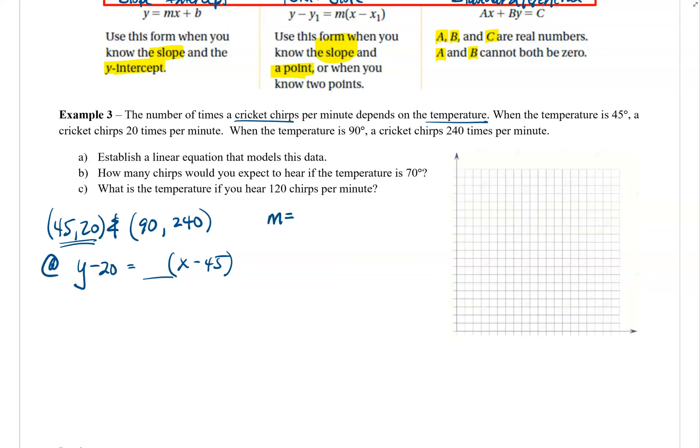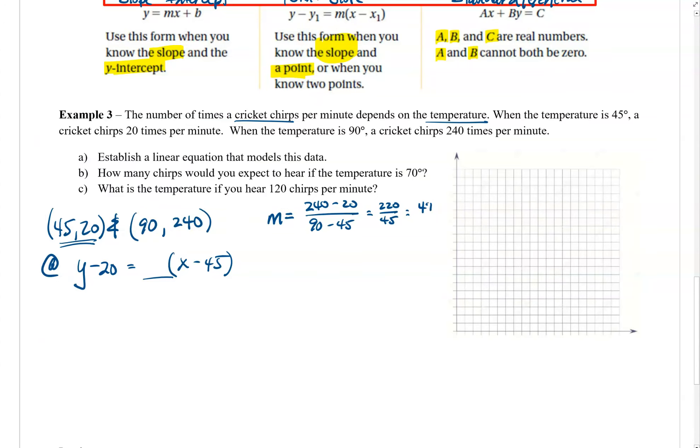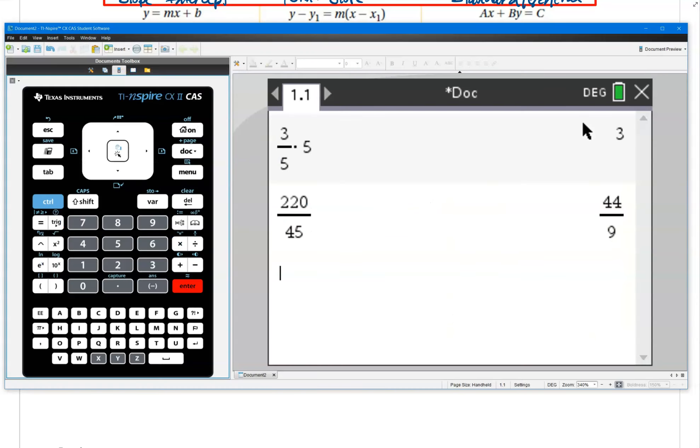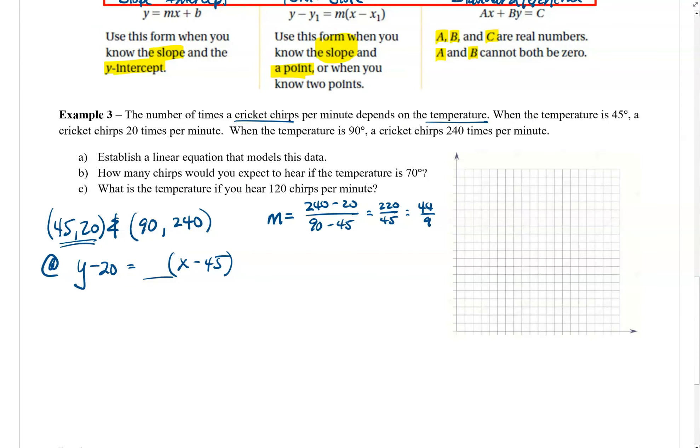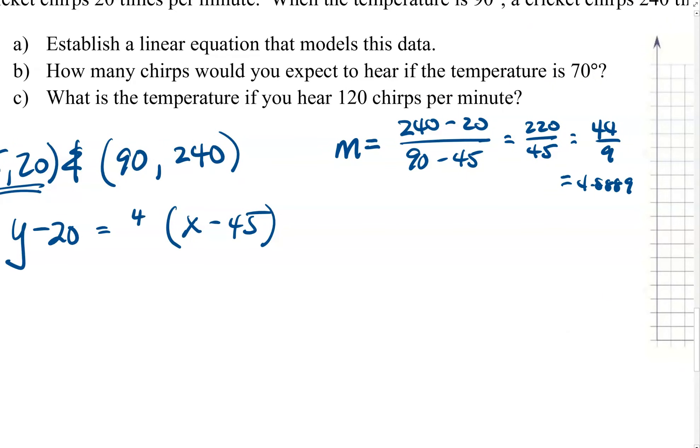The slope would be the difference in our y values. I'll take 240 minus 20 and divide that by 90 minus 45. To me, that looks like 220 divided by 45. And I can't really simplify that in my head, so I'll go to the calculator here. 220 divided by 45. If I just press enter, that calculator should reduce for us, and we get 44 ninths. If I wanted the decimal, I could do that too. I can press control, enter, and obtain the decimal. 4.8 repeating, it appears. So we might call this 4.888. I'll round it to the fourth place. 4.8889. Okay. So I'm going to call this 44 ninths for right now.